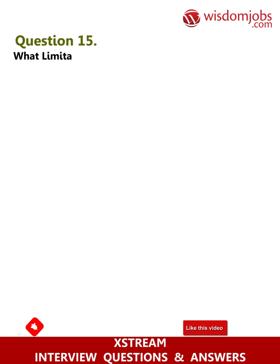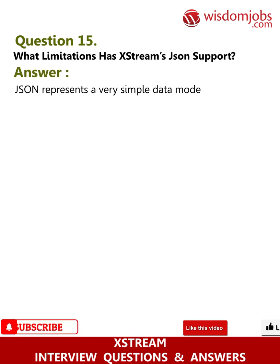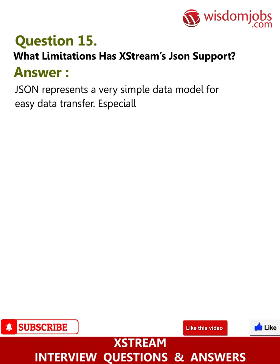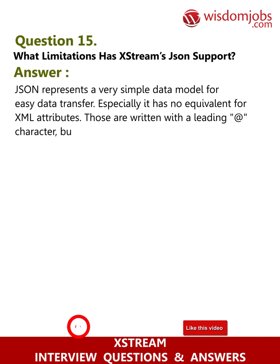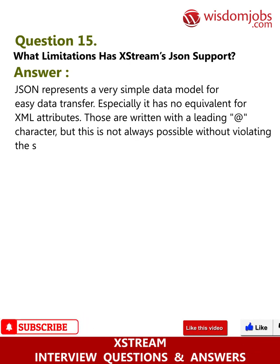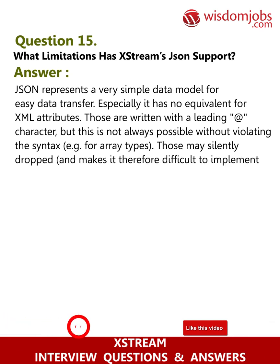Question 15: What limitations does XStream's JSON support have? Answer: JSON represents a very simple data model for easy data transfer. Especially, it has no equivalent for XML attributes. Those are written with a leading '@' character, but this is not always possible without violating the syntax — for example, for array types, those may silently drop and make deserialization difficult.